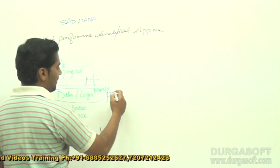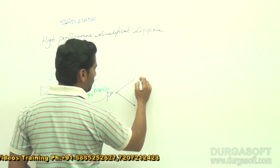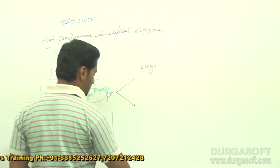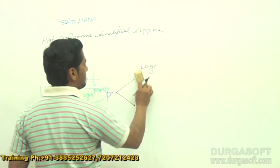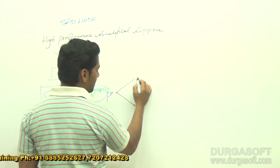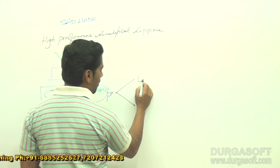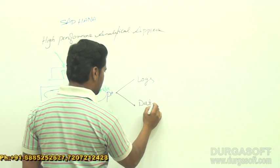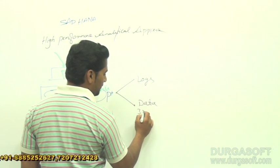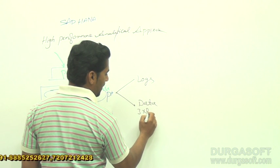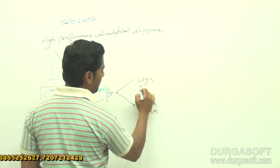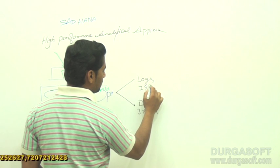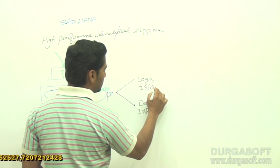We will discuss about this persistent layer, which has 2 types of logs. The persistent layer has logs and data files. It is always 3 times the size of RAM for data, and 1 time of RAM for logs.